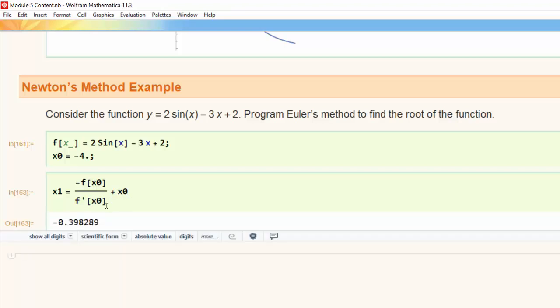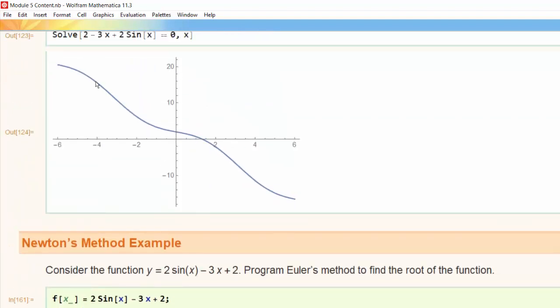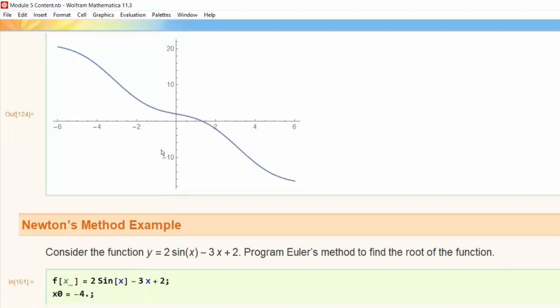Now we can look at the picture to see if -0.4 makes sense for an x₁. If I started at -4 and I found a tangent line here and followed to where it intersected the x-axis somewhere in this neighborhood -0.4 seems like a reasonable answer.